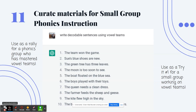Number 11: curate materials for small group phonics instruction with ChatGPT. You can ask it to write decodable sentences using vowel teams or a specific phonics feature, and it'll generate all the sentences. You can use these as a rally for a phonics group that has mastered vowel teams, or as a try-at-one for a small group currently working on vowel teams.